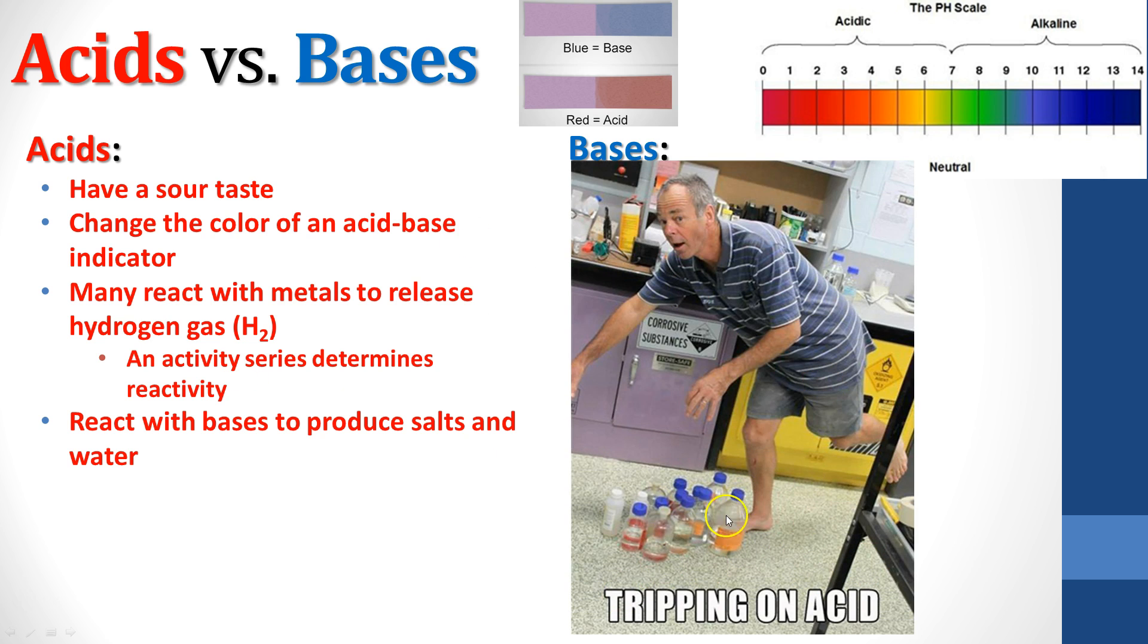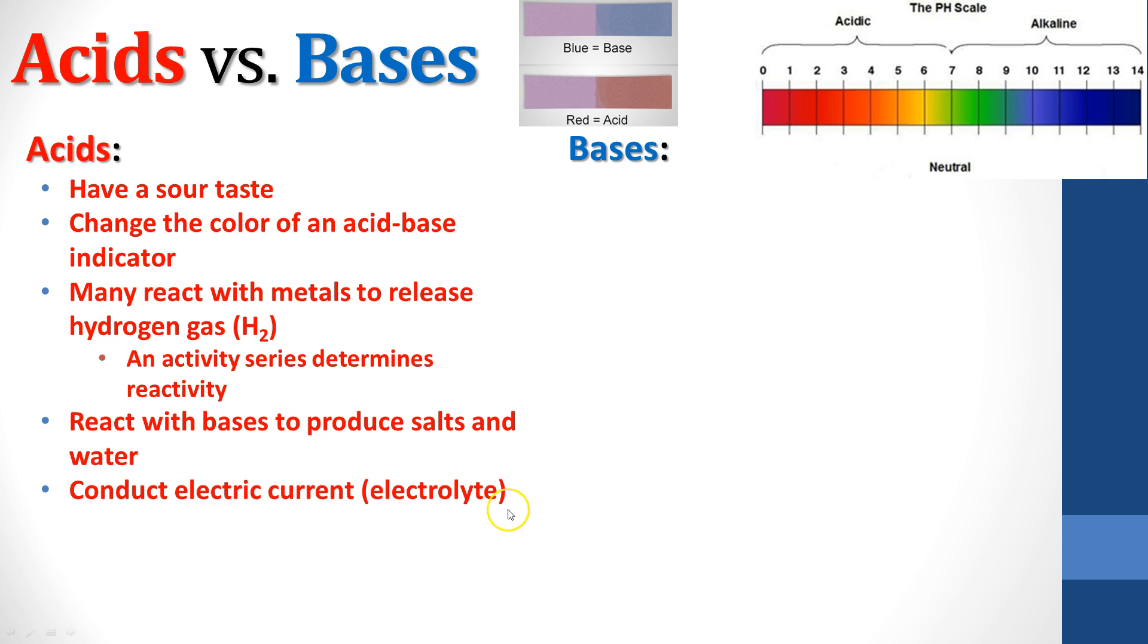This guy here, you get it? He's tripping on acid. But seriously, that's not safe. He should have shoes on. Acids will also conduct electric current. Remember, they are electrolytes. Some of them are going to be weak electrolytes. They only conduct electricity a little bit. Some are going to be strong electrolytes. Electricity easily passes through them. You can light up a light with it.